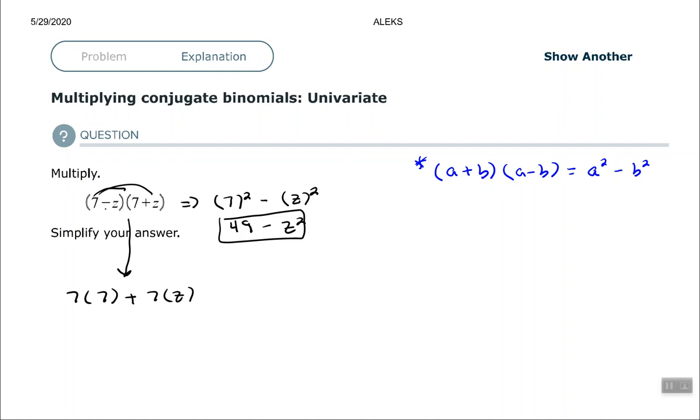Distribute the negative z. So negative z times 7 and negative z times positive z. Then 7 times 7 is 49, 7 times z, 7 times z negative or minus 7 times z, and then minus z times z is z to the second.